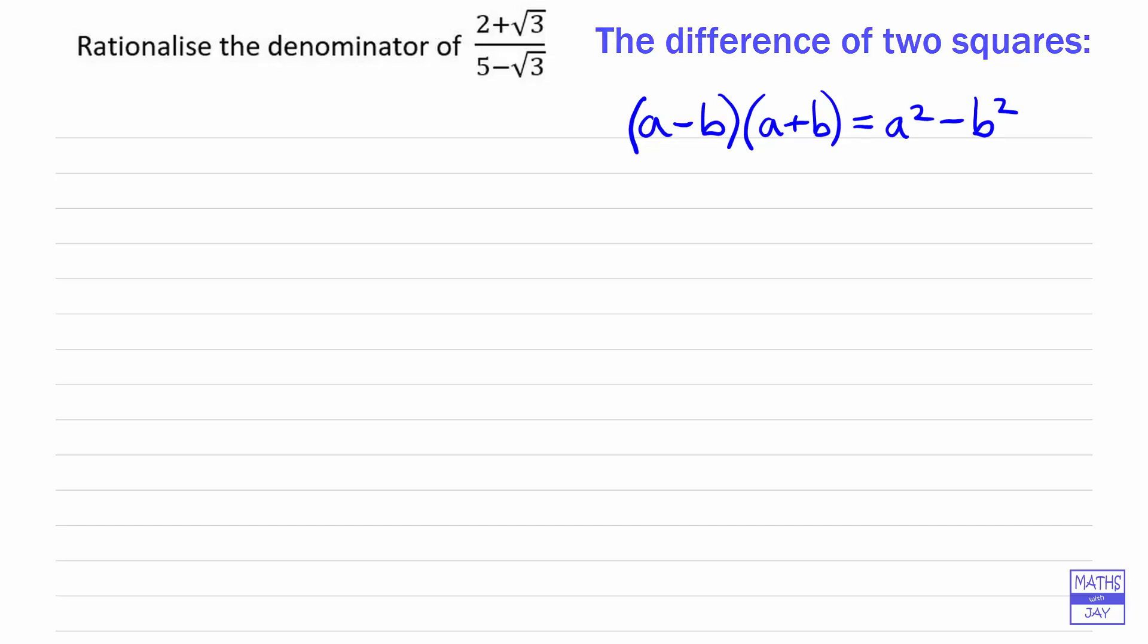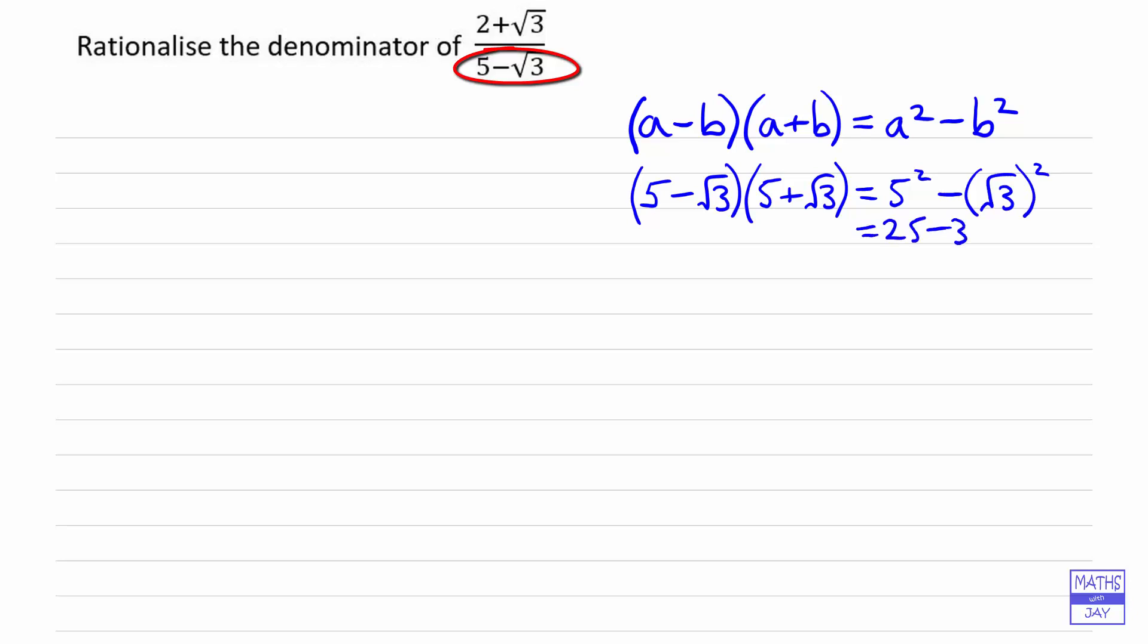That's why it's called the difference of two squares, because we've got a squared minus b squared. In this example, remember it's the denominator that we really need to work on. We need to somehow remove the root 3. So if we think of a as being 5 and b as being root 3, as we've got in the denominator, if we multiply that by 5 plus root 3, then we're going to get 5 squared minus the square root of 3 squared, so 25 minus 3, and that's going to be 22. The important thing here is that the answer doesn't have a root 3 in it, it does not have an irrational part, so we've rationalized that number.